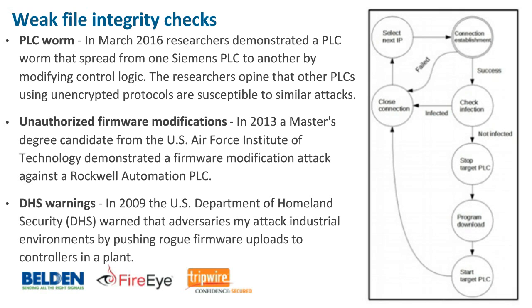Knowing whether something changed in your environment is a precursor to knowing if someone did something malicious. If you don't have visibility to what's going on and whether something is changing, you could have breaches and incidents and be completely blind to that. A lot of these devices sit in the industrial environment and we think of them as serial devices, but people are deploying serial-to-IP converters all over the place. These devices get connected and have IP addresses. If you're not getting visibility to what's actually connected to your network, there may be a lot more things than you think.